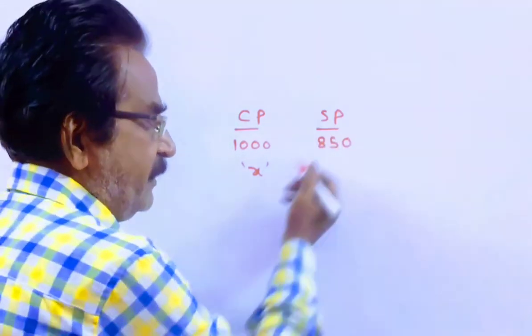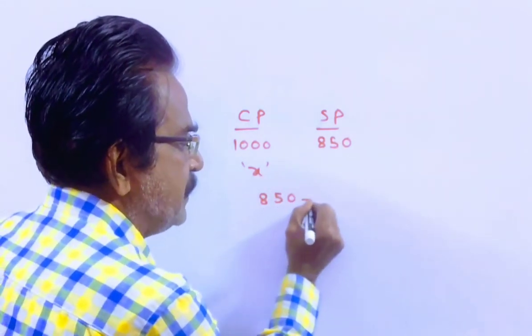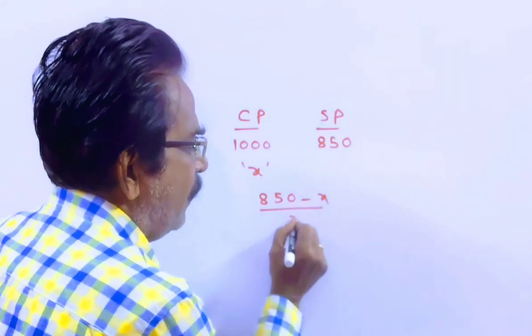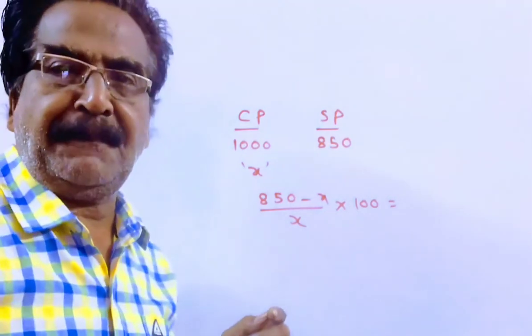Now let us see what is his profit percent. Selling price minus cost price upon cost price into 100. By doing this, we get his profit percent.